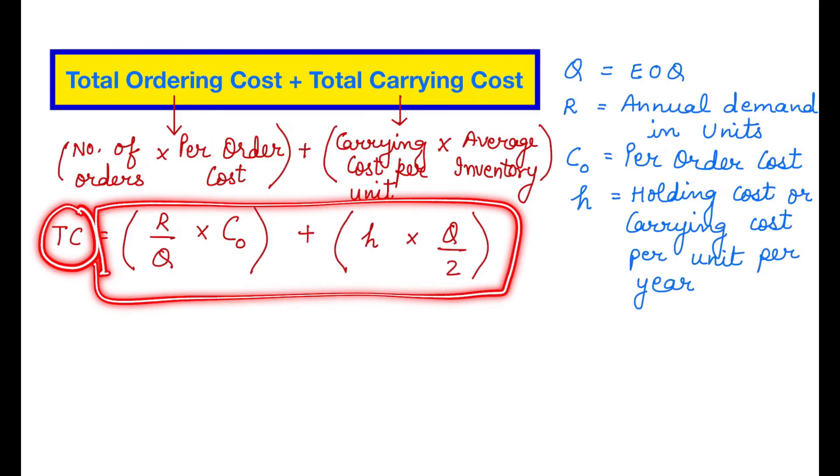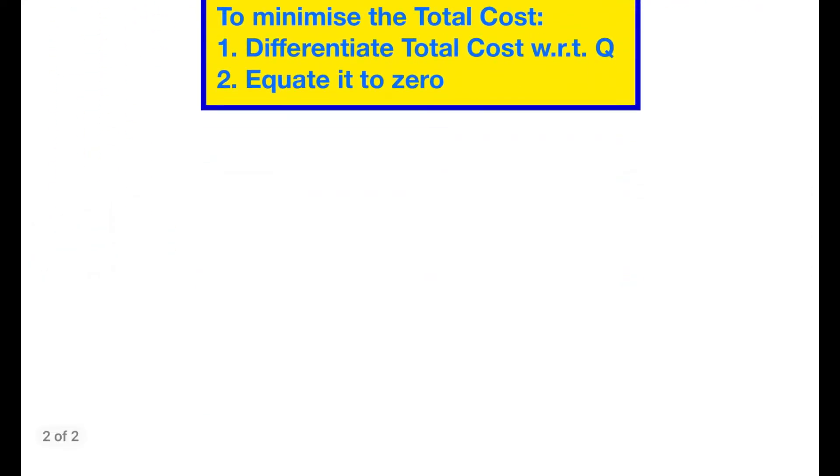Now our objective is to minimize the total cost. That is always the objective. How do you minimize the total cost? We will be using some mathematics here. In order to minimize the total cost, this is the cost equation which we have obtained. Now we are going to differentiate the total cost value with respect to Q and we will equate it to 0 in order to find out the minimum cost.